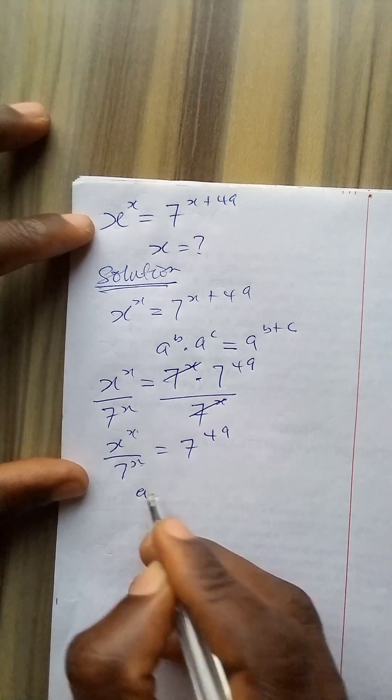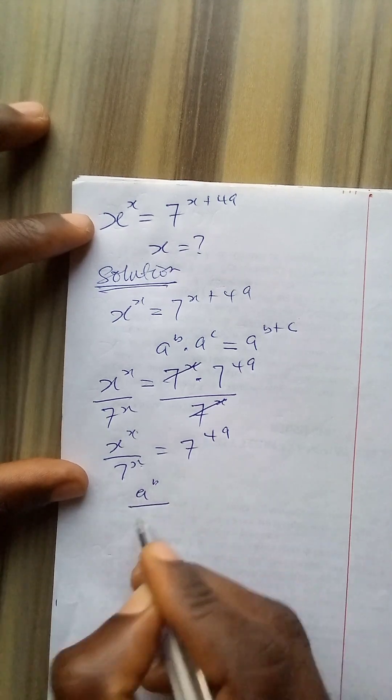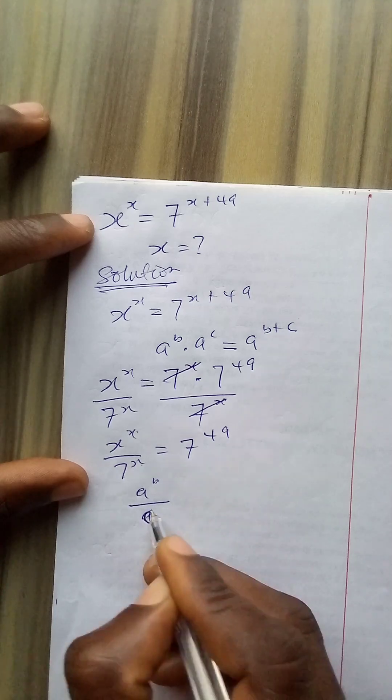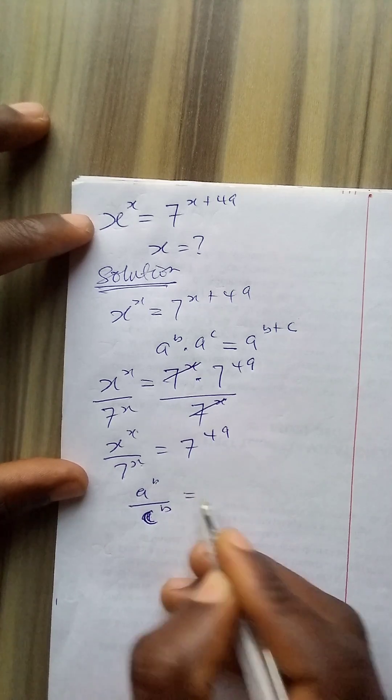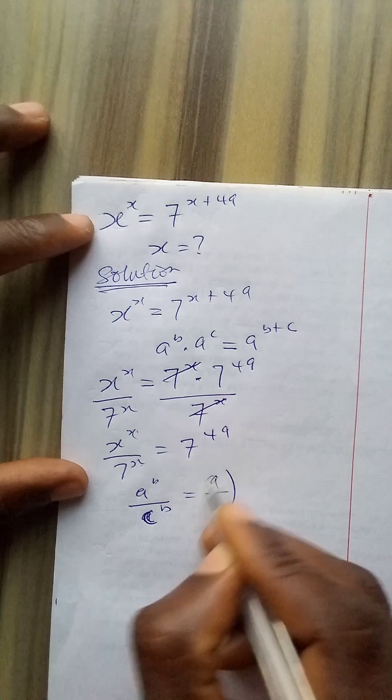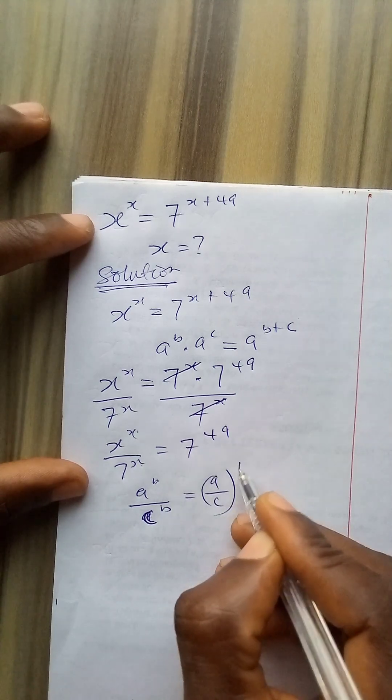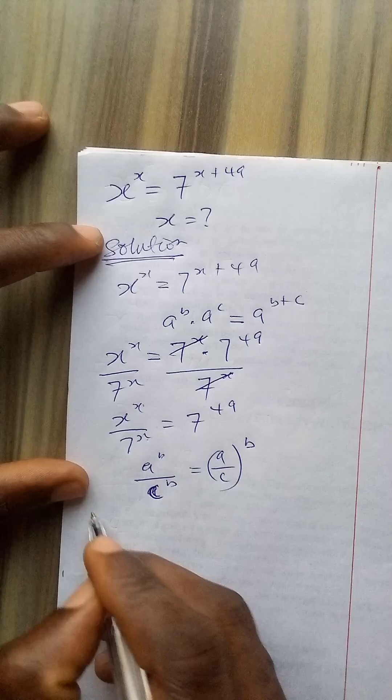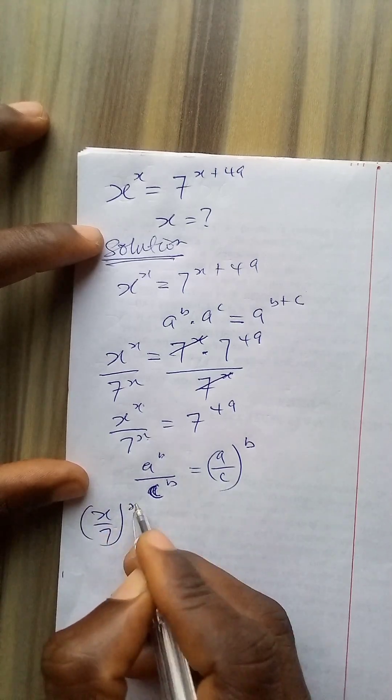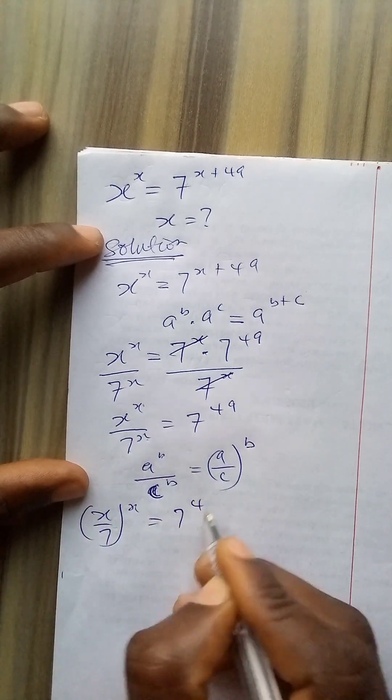It states that a over b divided by c over b equals a over c to the common exponent of b. So this will be applied here. So I have x over 7 to power x equals 7 to power 49.